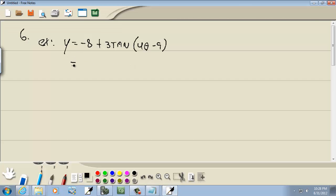Well, before we determine anything, we have to factor out the number that's in front of our theta. So I'll factor out a 4, and then that gives us 9 divided by 4, 9 fourths.